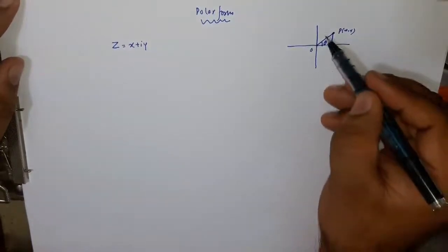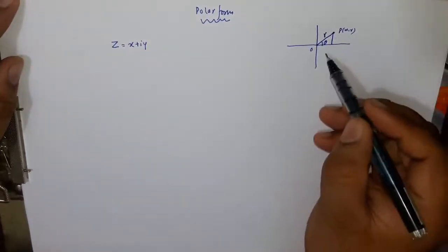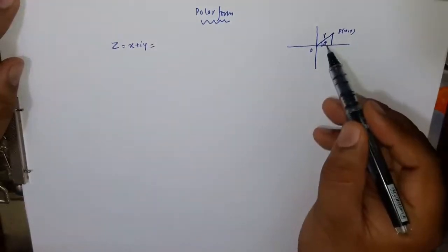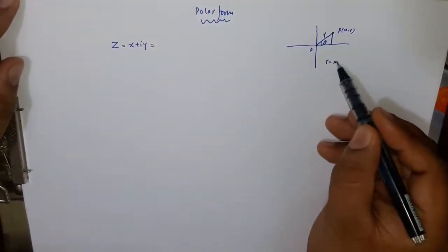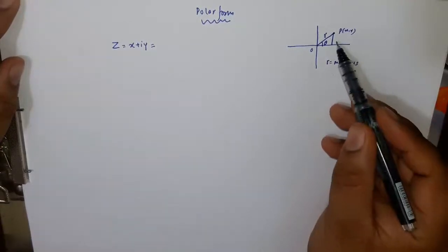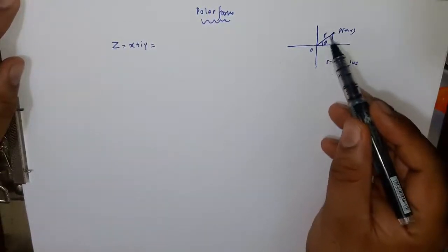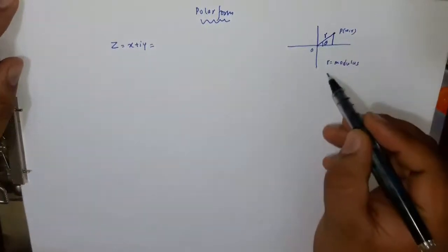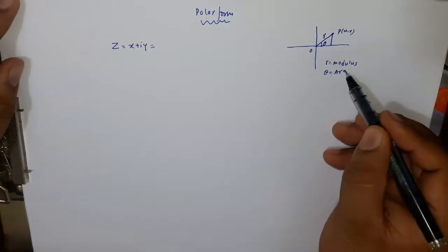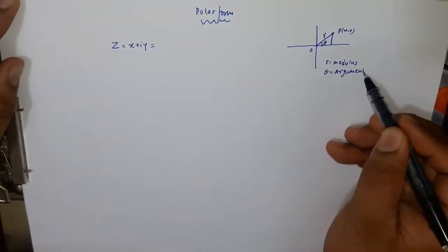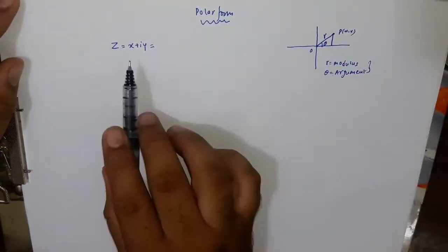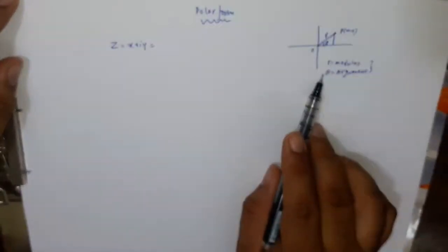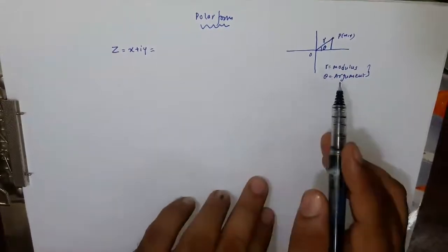Let this angle be theta and this length be R. So if this complex number can be expressed in the form of R and theta where R is called its modulus, modulus means the length of this line OP or we can say the distance of this point from the origin and theta is known as argument. If somehow we can express this complex number in terms of R and theta, then that form is called a polar form. So we will derive first of all that polar form.